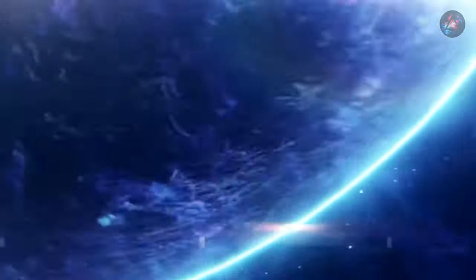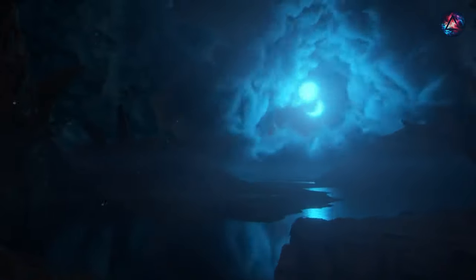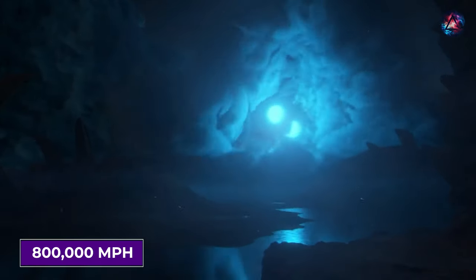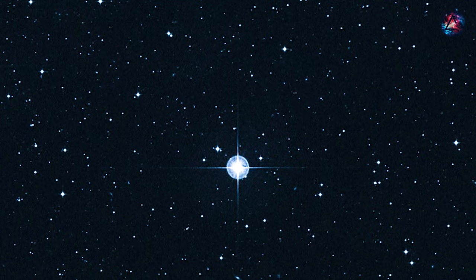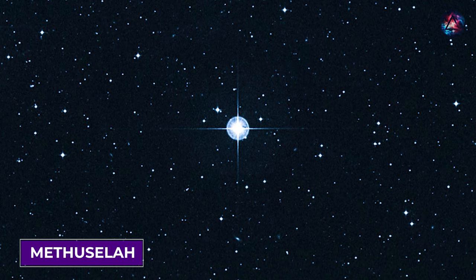Not only is this star ancient, but it also possesses remarkable speed, traversing the sky at a staggering 800,000 miles per hour. What adds to the intrigue is that HD 140283, better known as Methuselah, ranks among the oldest stars known to scientists.